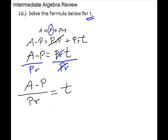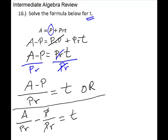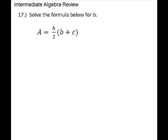If you see them split it in the book and make two fractions — putting each piece of the numerator over the denominator and reducing — that is also acceptable. That form would be a over pr minus p over pr equals t, and the p's cancel, giving you a over pr minus 1 over r equals t. You might see it written that way.